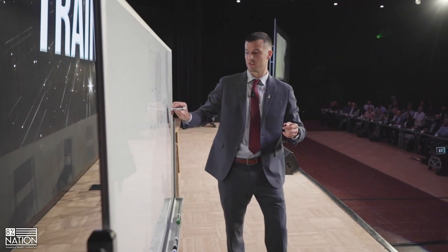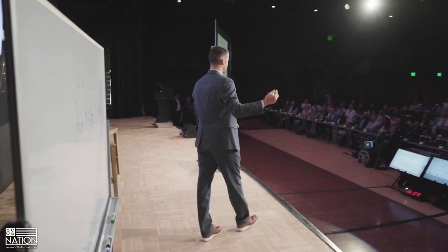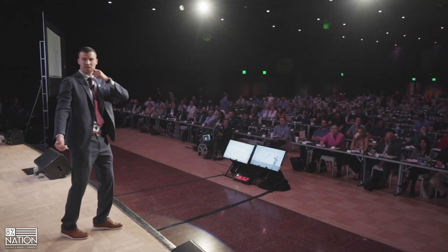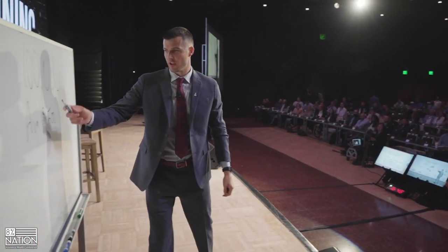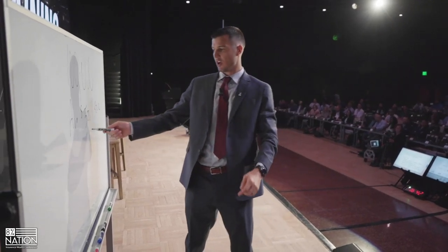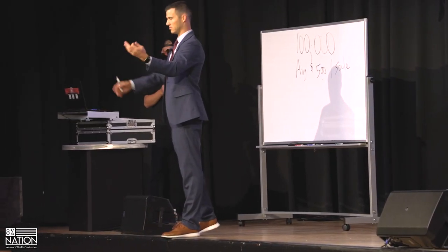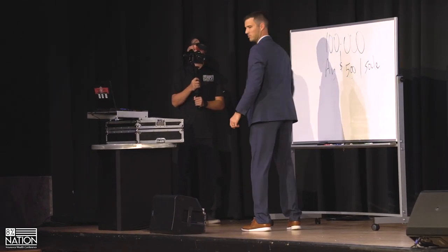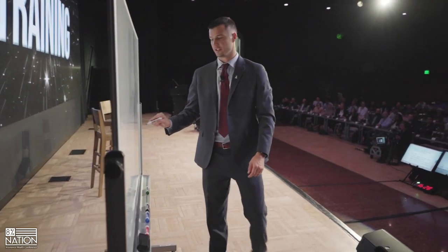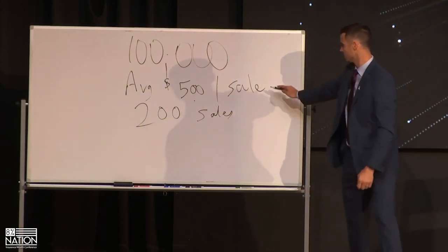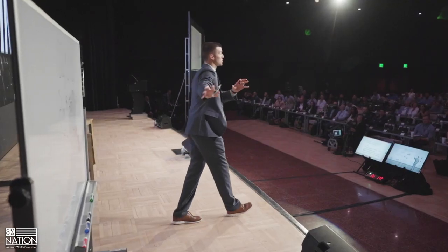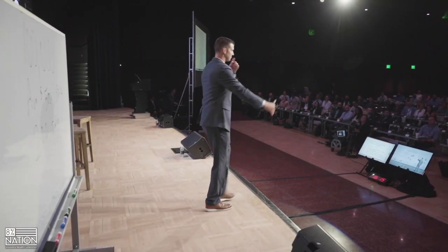Some of you have seen this on our YouTube, some of you have seen this similar thing at some of our live training events, but for those that haven't and are new, this is how you build a plan. $100,000 divided by 500 bucks is $200. 200 sales is what you need based on this. I'm not going to get into carriers or products or commission — none of that. We're just going to use this as an example. You can use your specific example later on when you're building your own plan.